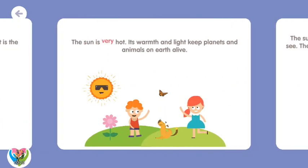The Sun is very hot. Its warmth and light keeps planets and animals on Earth alive.